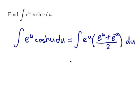Okay, and I can expand that out. So I'll get e to the u squared, which is e to the 2u, plus e to the u times e to the minus u would be e to the 0, which would be 1.